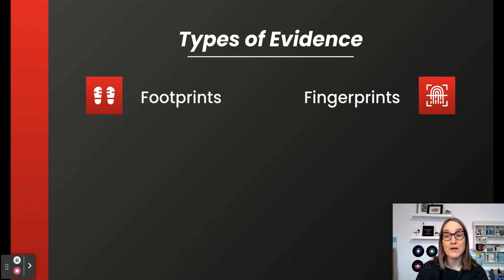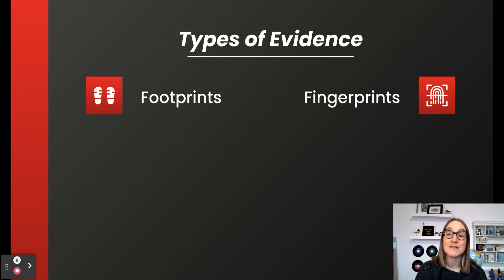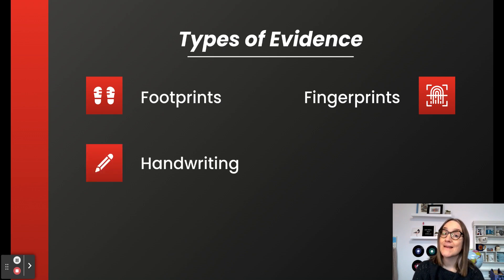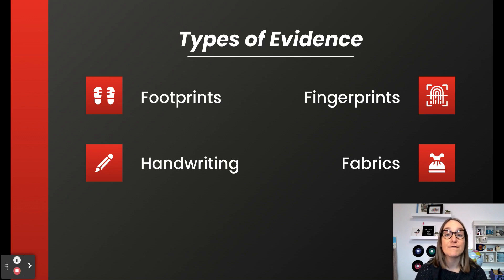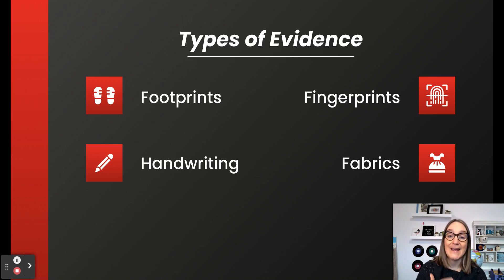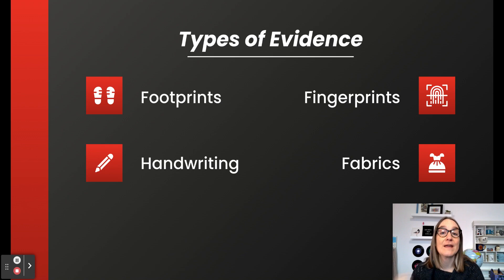Investigators also look for fingerprints. Criminals may leave fingerprints at the scene of a crime, and investigators can match unique fingerprints from the crime scene to the unique fingerprints of a potential suspect. Investigators can also analyze handwriting from a crime scene to match it to the handwriting of a suspect. And fabrics — a criminal sometimes leaves things behind at a crime scene. For example, in a violent crime, clothing may become ripped or torn in the struggle, and fibers or even larger pieces of fabric can be left behind. Investigators can analyze and compare fabrics from a crime scene to items of clothing that the suspect may own or may have worn.